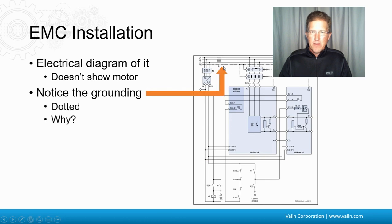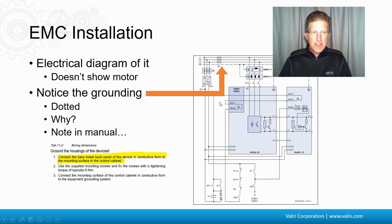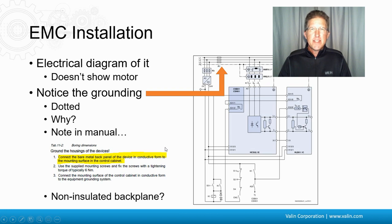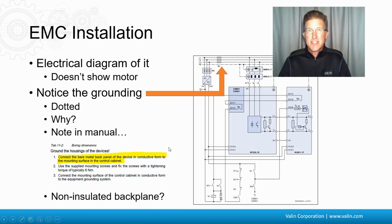Notice the grounding in the diagram — it's shown as dotted. There's a note in the manual that says: connect the bare metal back panel of the device in conductive form to the mounting surface in the control cabinet. That's a non-insulated backplane. Again, the fine print concepts are very important — simple concepts, but most people overlook them. I've solved electrical noise issues many times just by attaching the R-clamp or P-clamp of the motor cable to the drive and telling them to take the paint off the panel behind the drive.